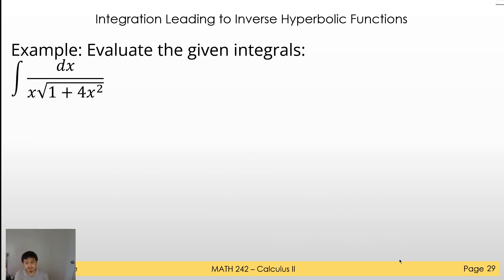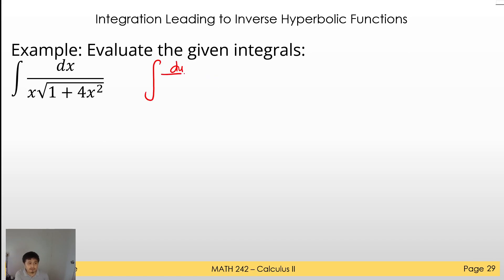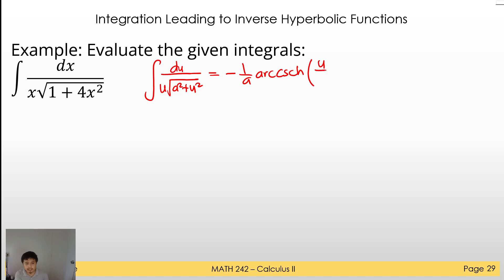For another example, evaluate the given integral. We can utilize the formula: the integral of du over u times the square root of a² plus u², which equals negative 1/a · arc csch(|u/a|) plus C. It should be absolute value.